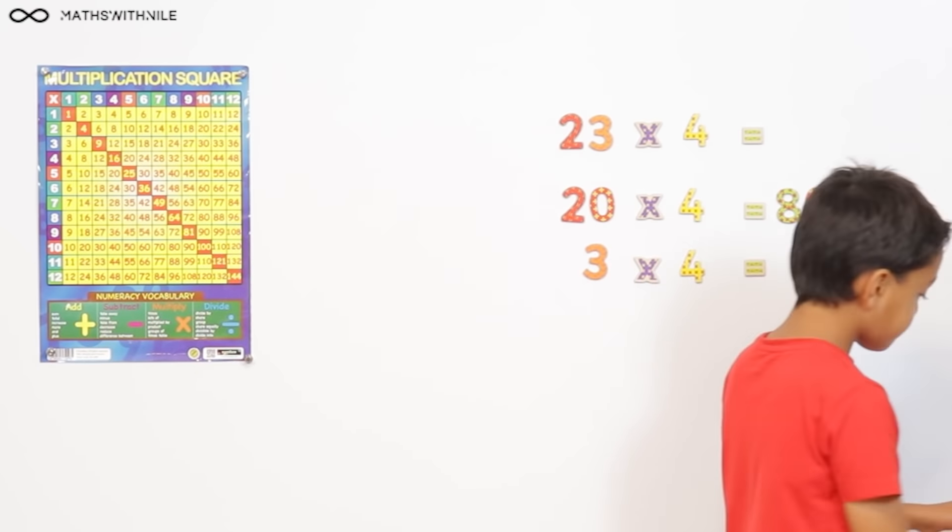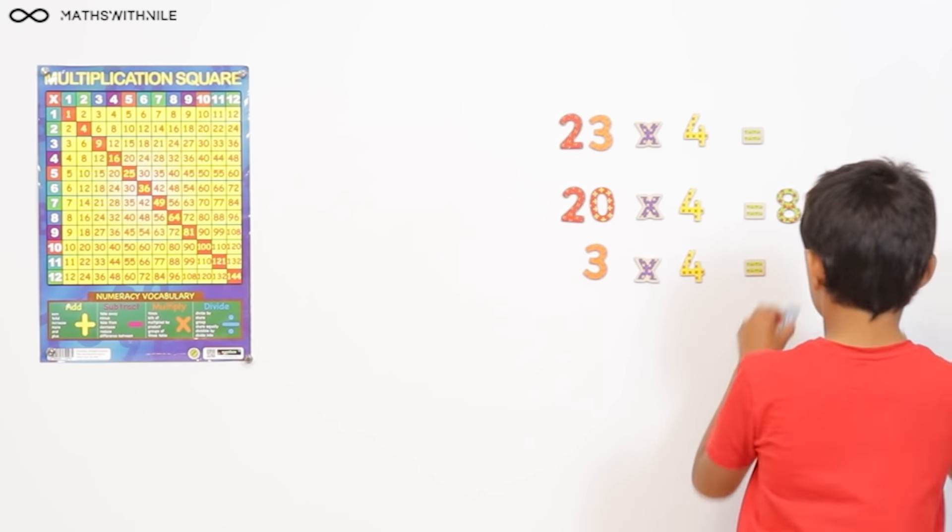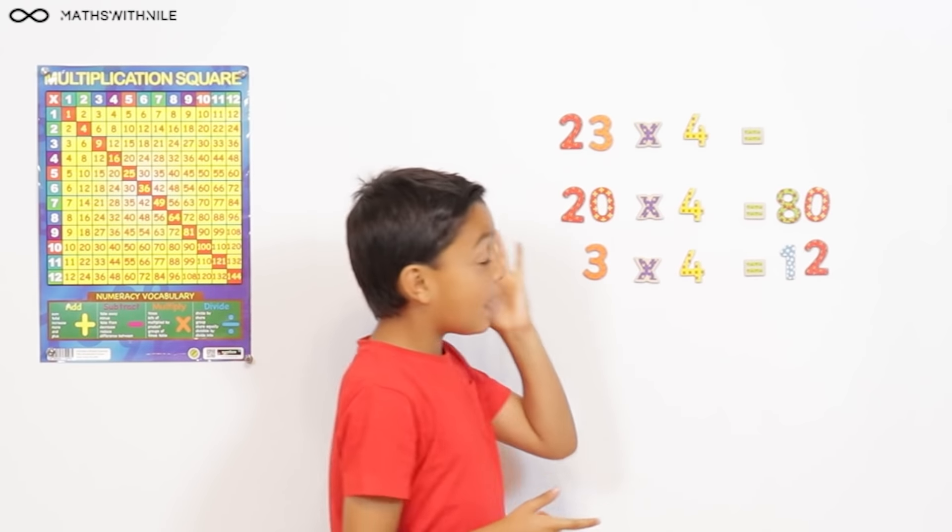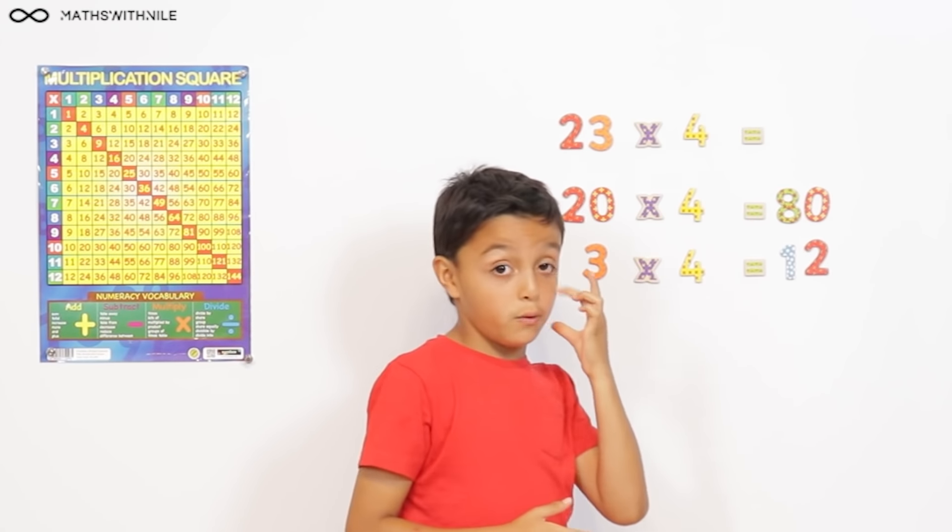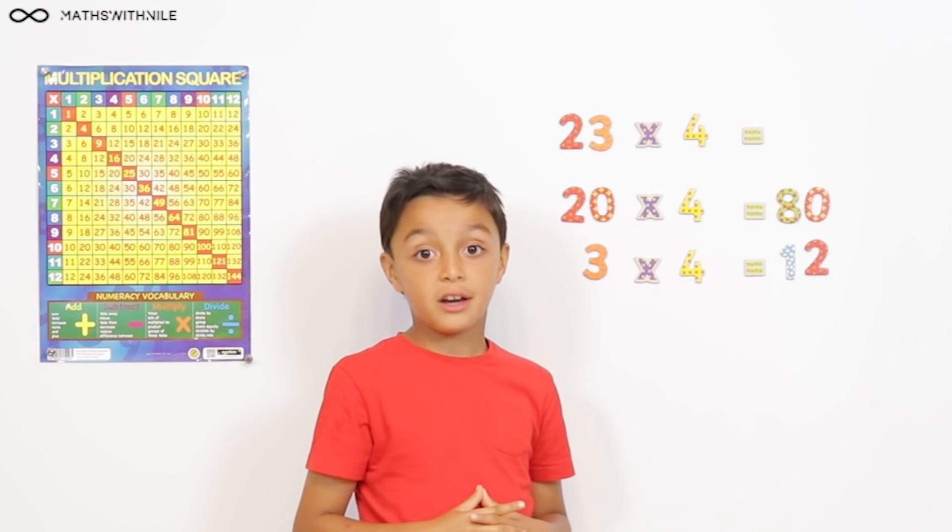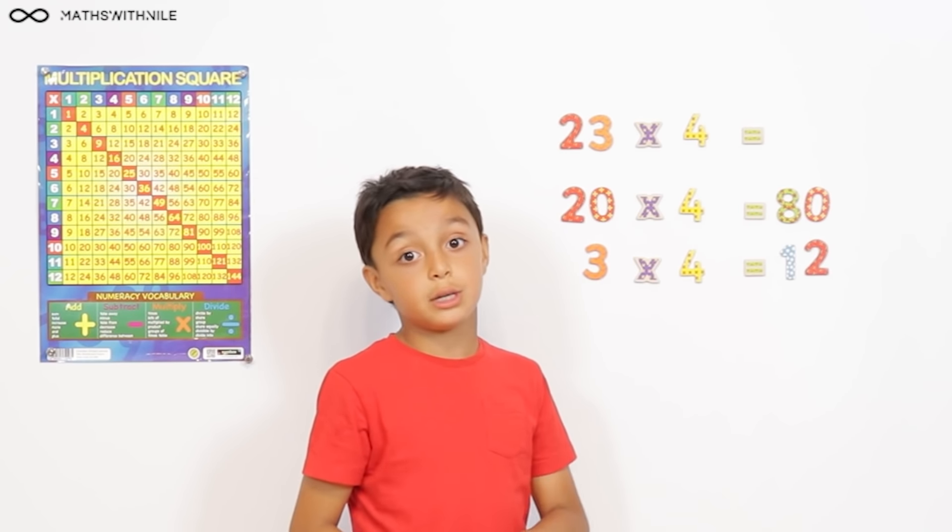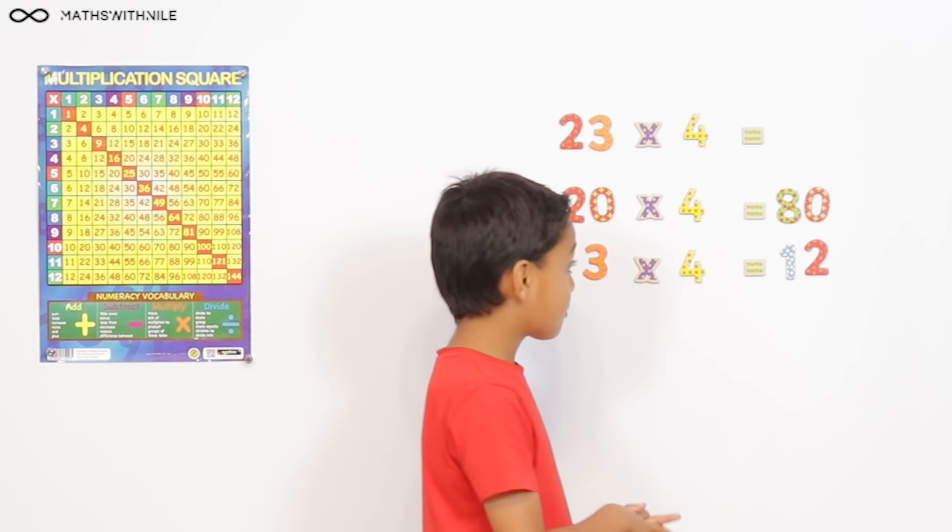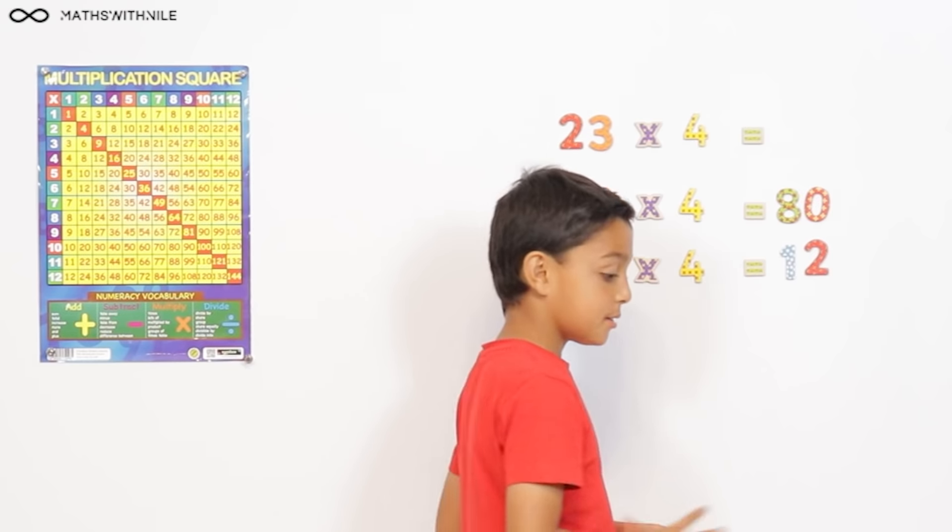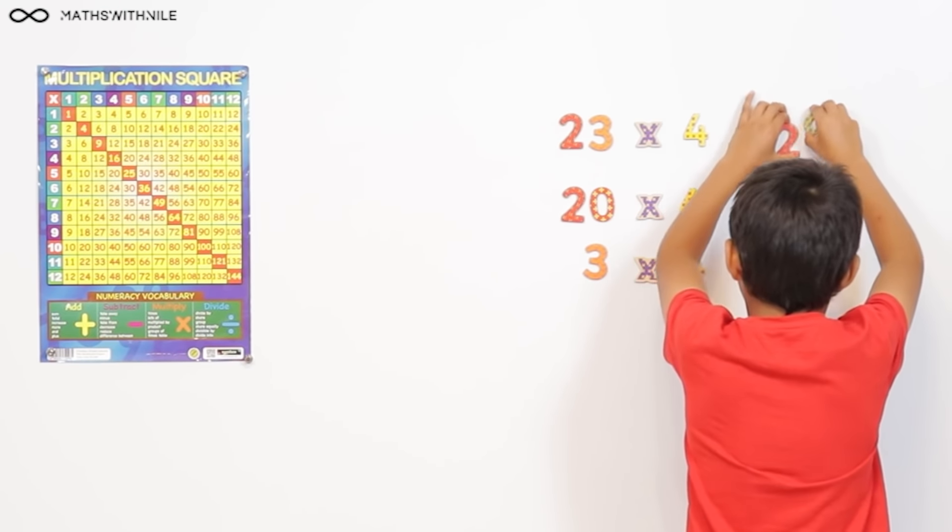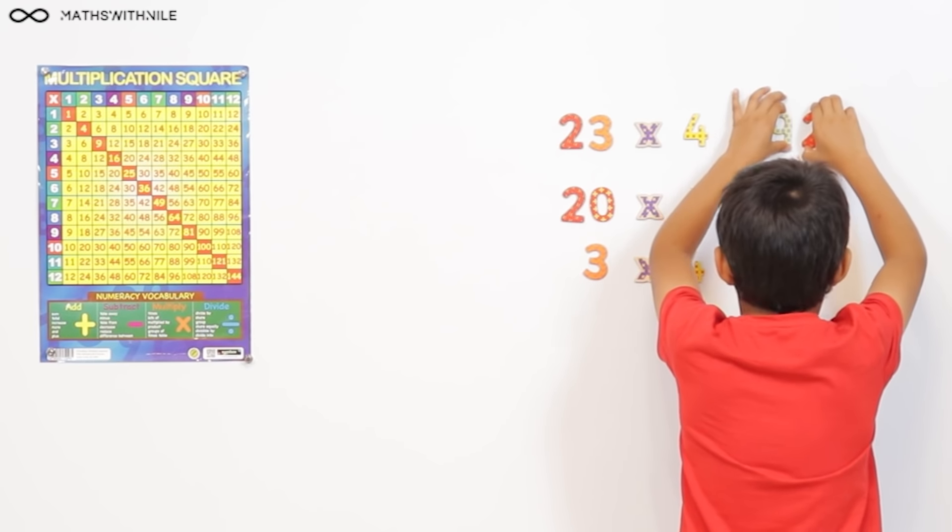Okay. So, can you put the answer? Okay. So, 80 add 12. What does 80 add 12? Well, 80 add 10 equals 90 and then 90 add 2 equals 92. So, what is the answer to 23 times 4? 92. Brilliant. So, put your answer in. Good job, Niall.